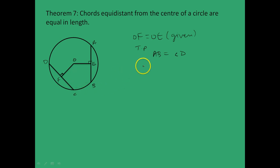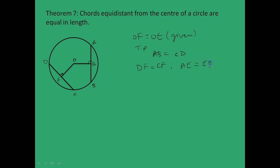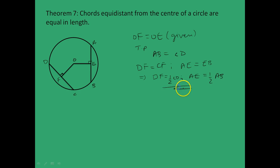We know that perpendiculars from the center bisect the chord, so DF equals CF and AE equals ED. Therefore DF equals half of CD and AE equals half of AB. We will use this fact in the proof. Join OD and OA — for this proof we only need these. OD equals OA because both are radii.